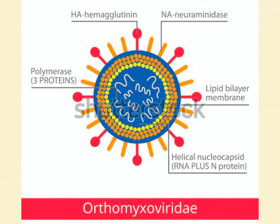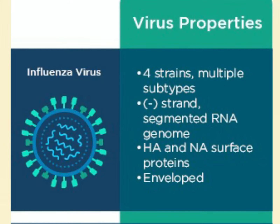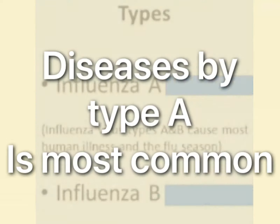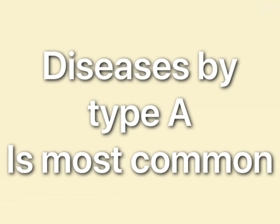Influenza virus belongs to the orthomyxoviridae family. They are segmented, negative, single-stranded RNA viruses. Only type A and B cause diseases in humans, and disease by type A is the most common.